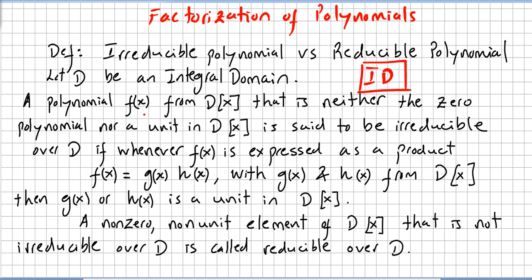So a polynomial f(x) from this ring of polynomials — this integral domain of polynomials — that is neither the zero polynomial nor a unit in the polynomial integral domain, is said to be irreducible over D if whenever f(x) is expressed as a product f(x) = g(x) · h(x), with g(x) and h(x) from the polynomial integral domain, then either g(x) or h(x) is a unit in the polynomial integral domain.